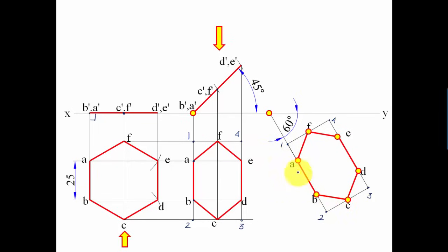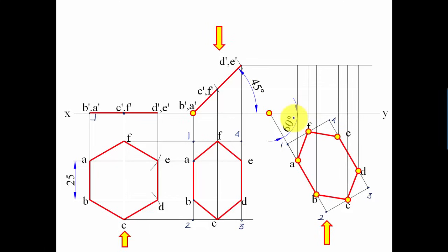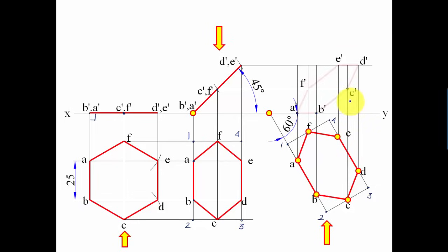You can now see clearly that AB is inclined at 60 degrees. Let's look at this from the front: bring projector lines from bottom to top and from left to right, then locate intersection points. The horizontal line for A-dash and B-dash intersects the vertical for A to give A-dash. The horizontal for C-dash and F-dash gives C-dash, and so on. Join all the points, and that is the final projection of a hexagonal plane with one side in the HP, surface inclined at 45 degrees to the HP, and that side inclined at 60 degrees to the VP.